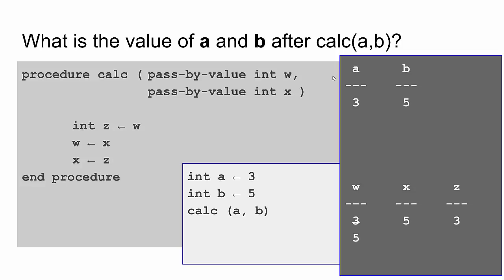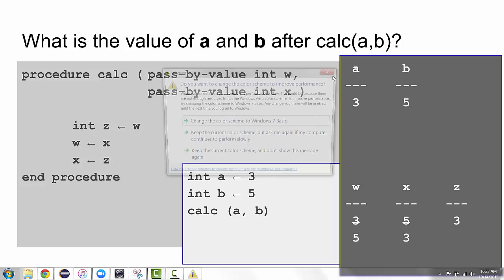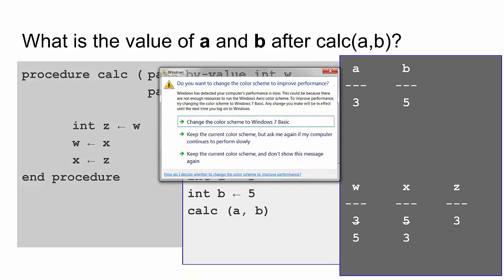Finally, the procedure says to take what's in z and put it in x. So we take what's in z, which is 3, overwriting the 5 that was in x with a new value 3. So the procedure ends, and the question was, what is the value of a and b after calc ab? Well, the value of ab remains unchanged. It's 3 and 5. All of the changing happened down here in the bottom, not up in the top.